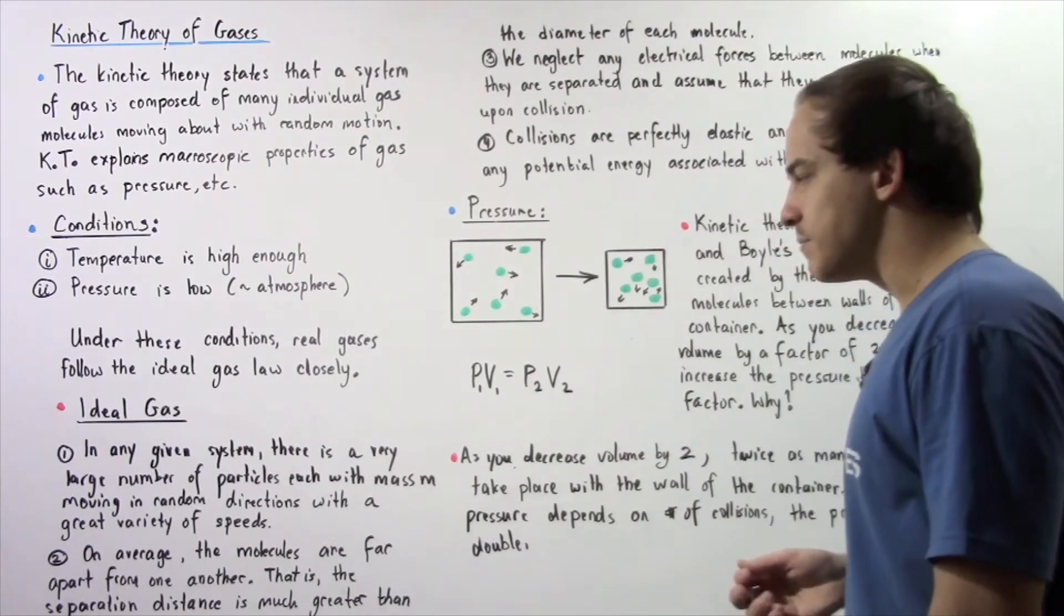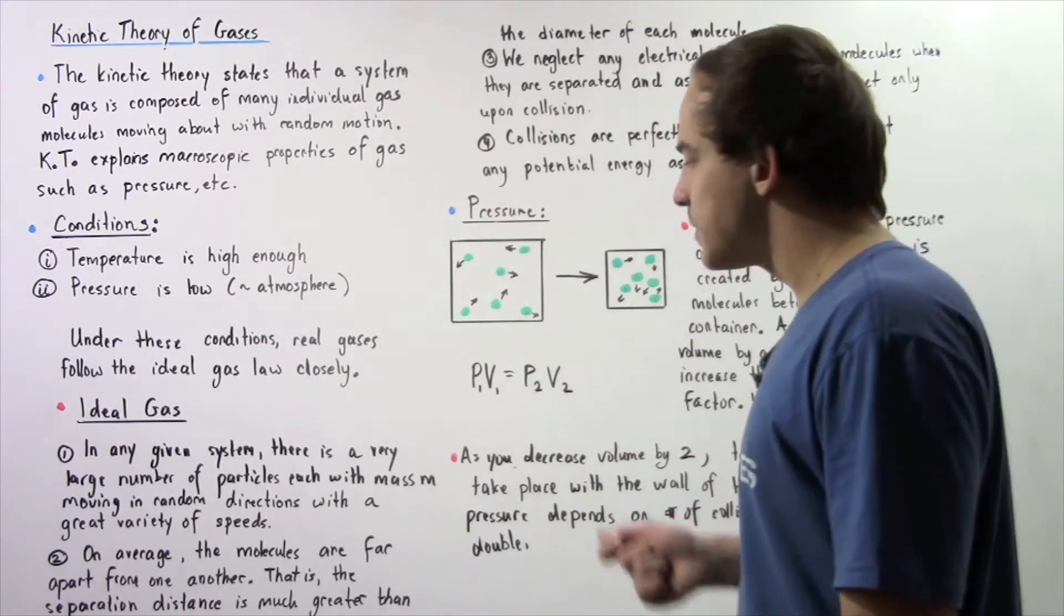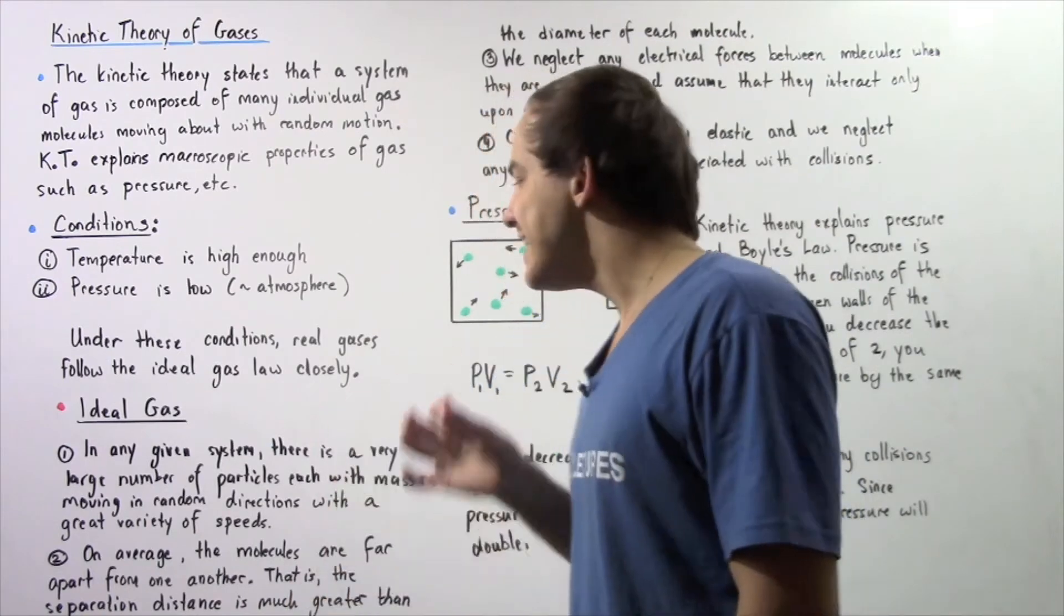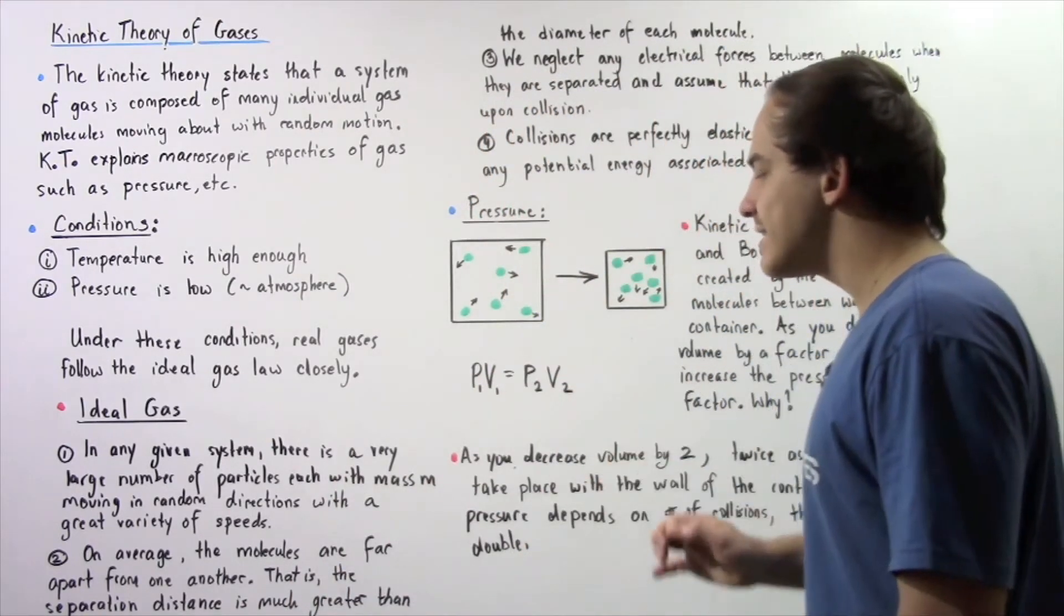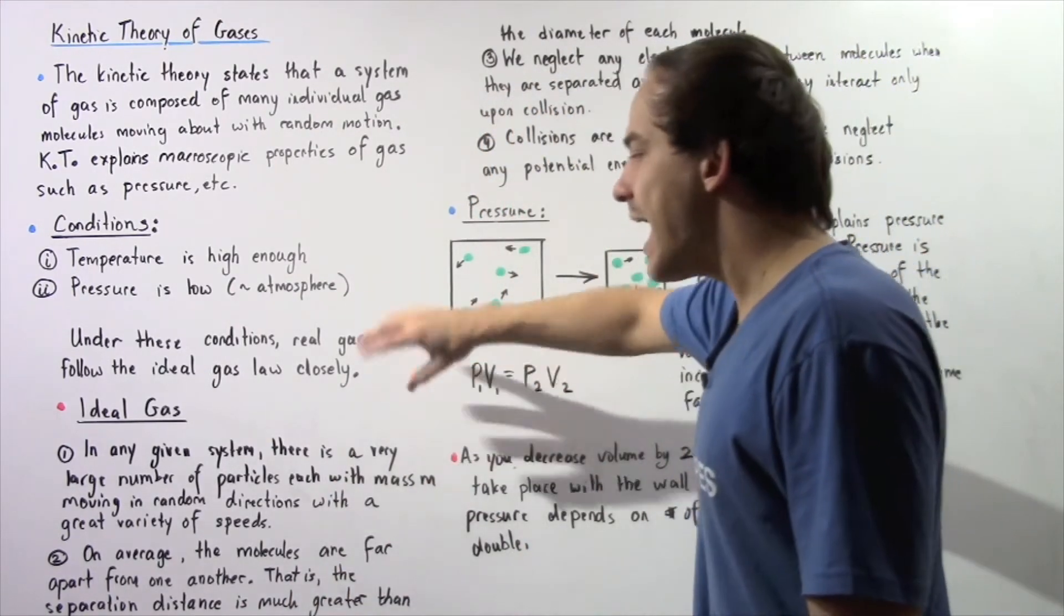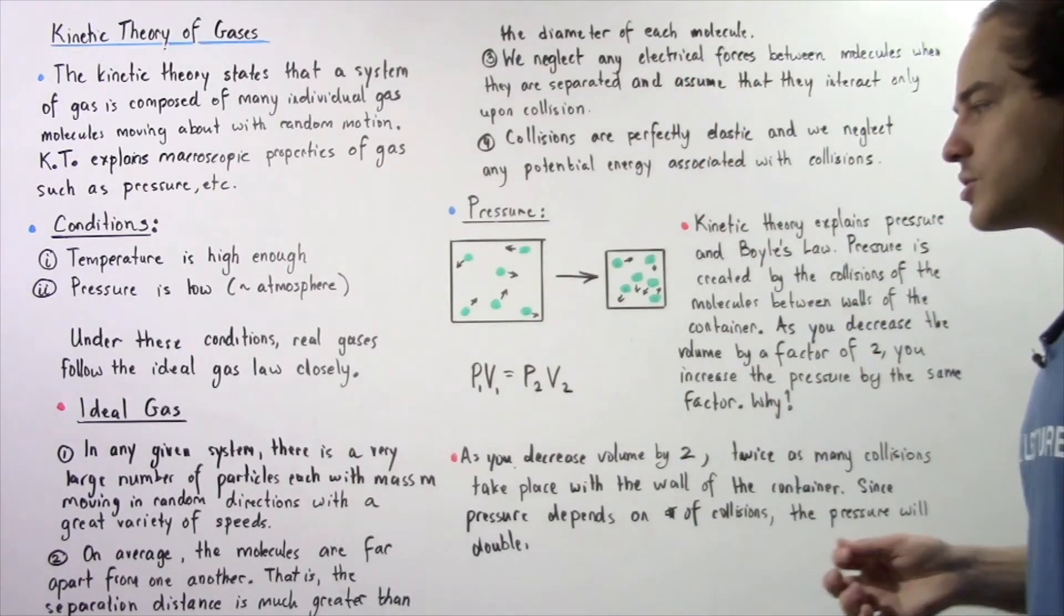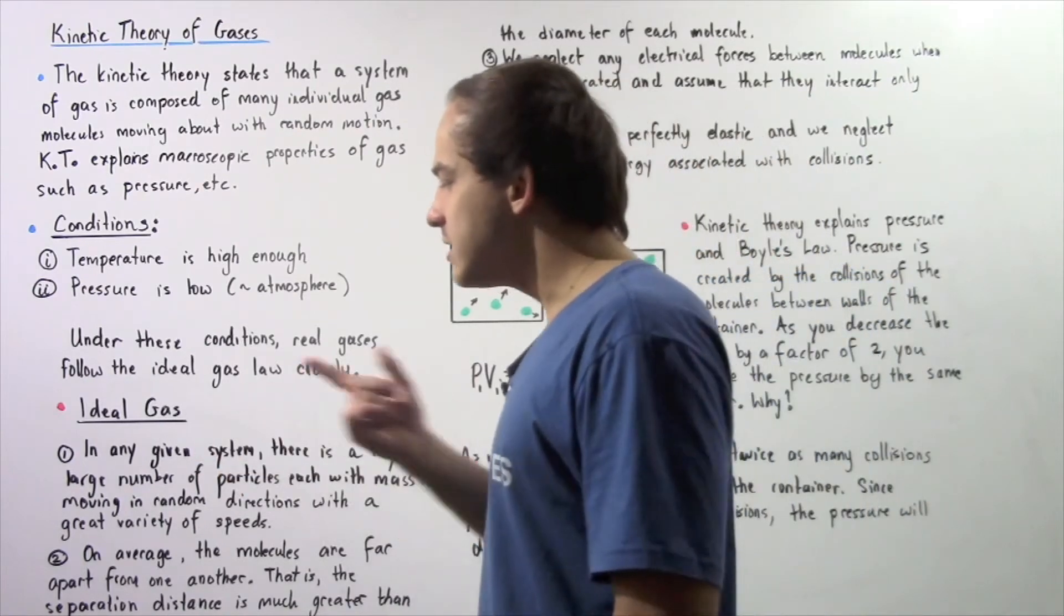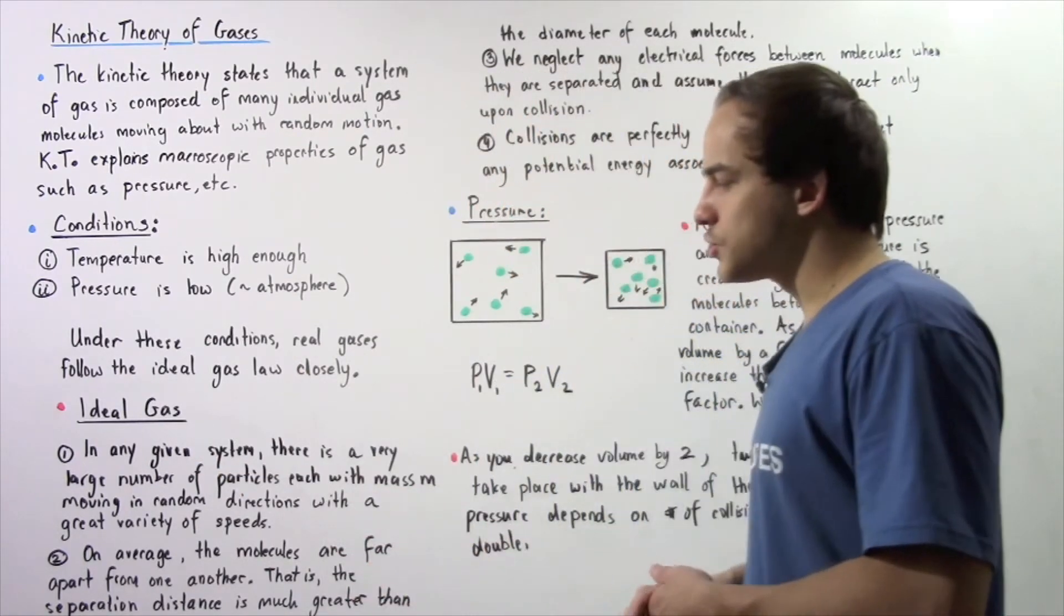So let's begin with point number one. In any given gaseous system, there is a very large number of particles and each particle has the same mass given by m. And each particle moves in random directions with a great variety of speeds.